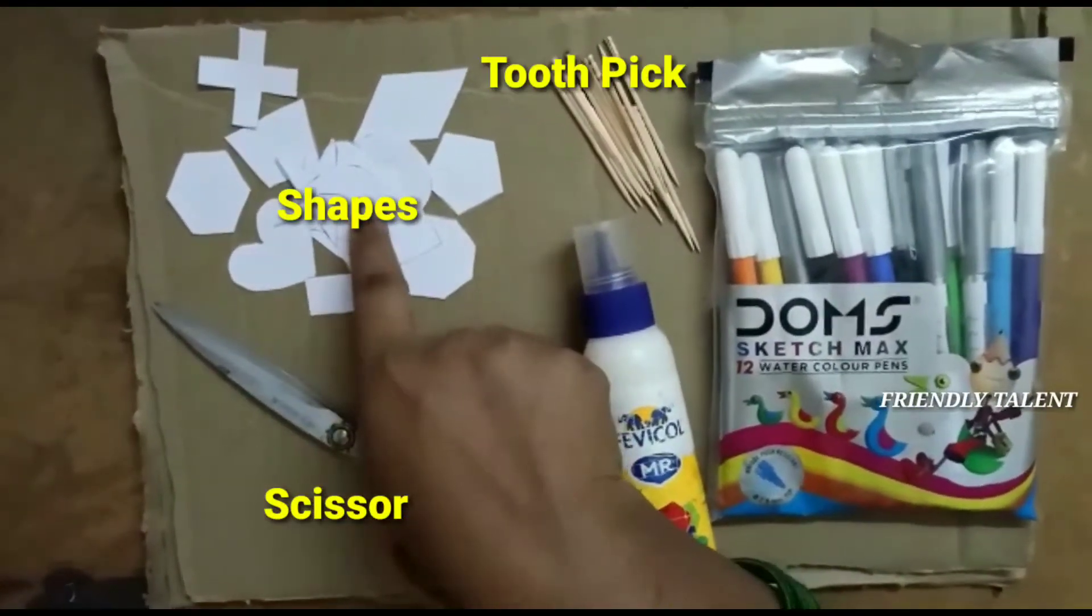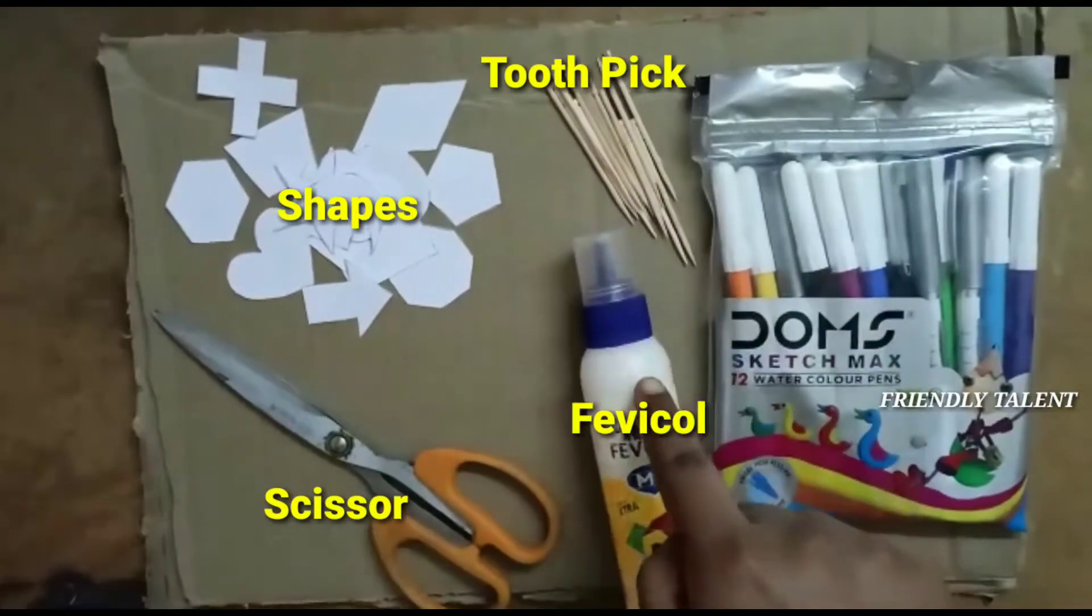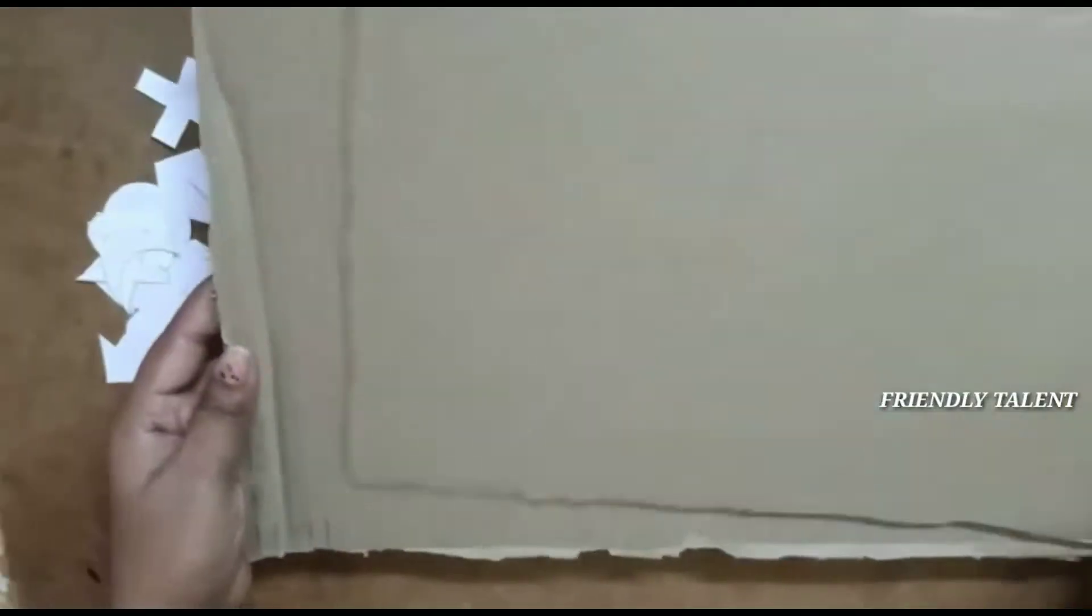First, we have scissors, a paper, a toothpick, favicol, a sketch pen, and two cardboards.